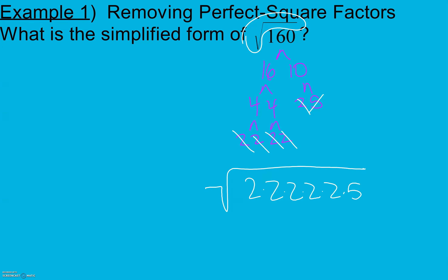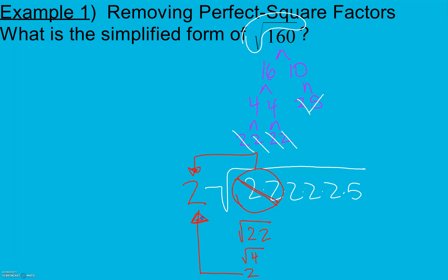Now I'm going to look at all my prime factors and see if I can find any pairs of the same factor. I have a 2 times a 2 — a pair of 2s. That comes out of my square root as a 2, because that's the same as taking the square root of 2 times 2, which is the square root of 4, and the square root of 4 is 2.